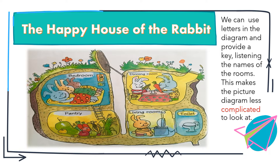We can see each part of the rabbit's happy house. They have a bedroom, dining room, pantry, living room, and toilet. This picture diagram shows that the house of the rabbit is on the ground and also illustrates the parts of their house. We can use letters in the diagram and provide a key listing the names of the rooms. This makes the picture diagram less complicated to look at.